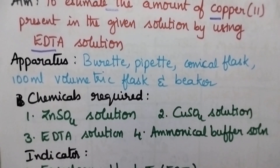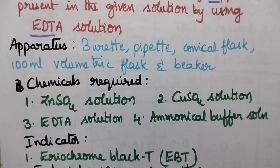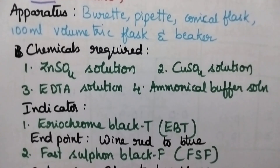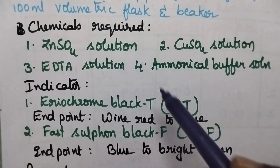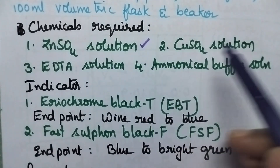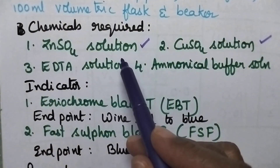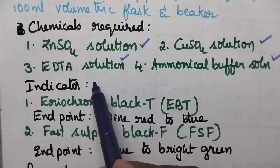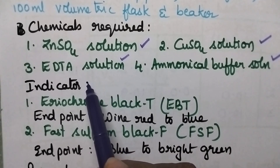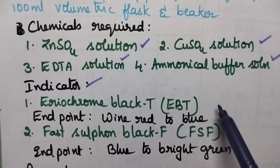The apparatus includes burette, pipette, conical flask, 100 ml volumetric flask, and beaker. Coming to the chemicals required, they include zinc sulfate solution, copper sulfate solution, EDTA solution, ammoniacal buffer solution, and especially during the estimation of copper, two indicators will be used.